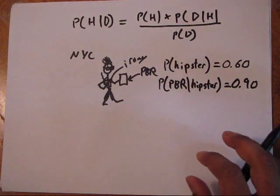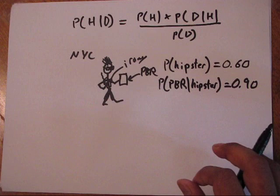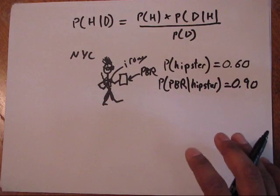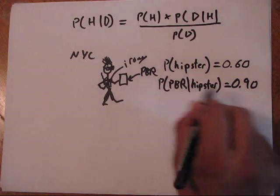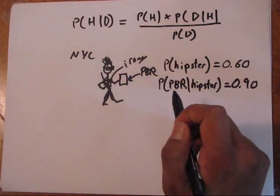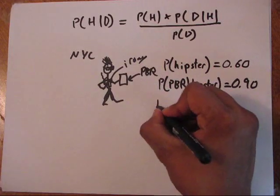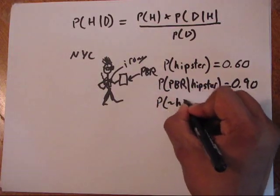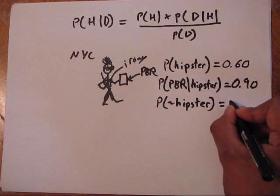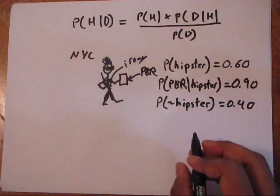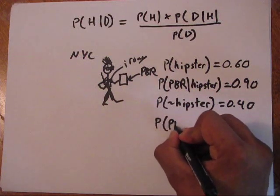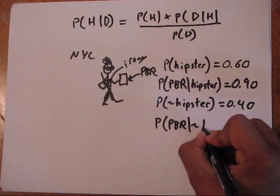Maybe 10% of hipsters are super progressive and it's like ironic now that they don't drink PBR—in fact, they drink Zima, I don't know. But we need those two statistics. We also need to look at the probability of the data, so we need to know what is the probability of not being a hipster. Because probability sums to one, that probability will be 40%. Then we need one more statistic: what is the probability of drinking PBR if you're not a hipster?